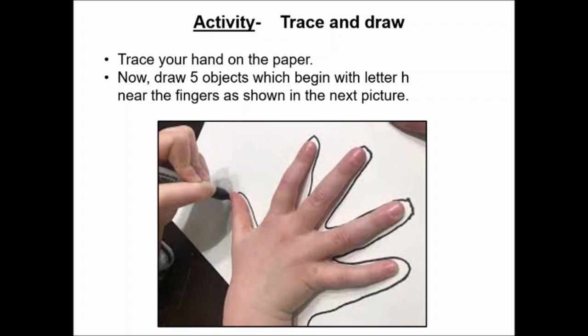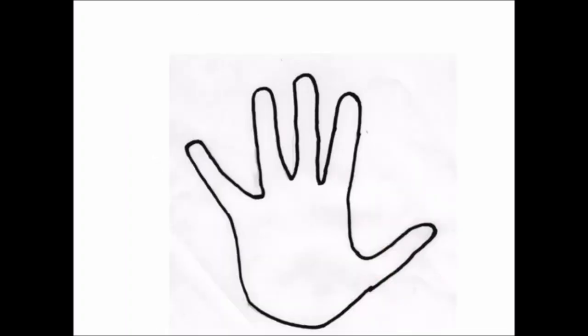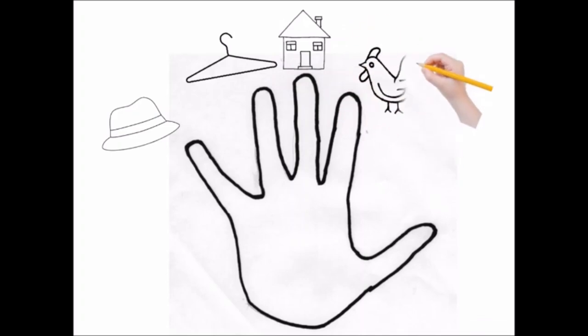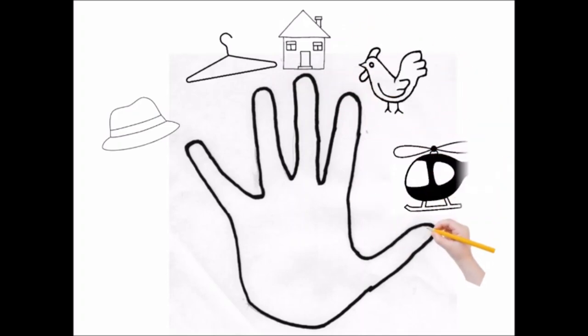Like this, after tracing your hand you have to draw five objects near each finger like this: H her hat, H her hanger, H her hut, H her hen, H her helicopter. So all these drawings are near the fingers and not inside the fingers.